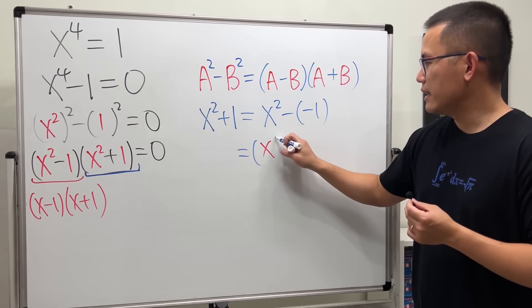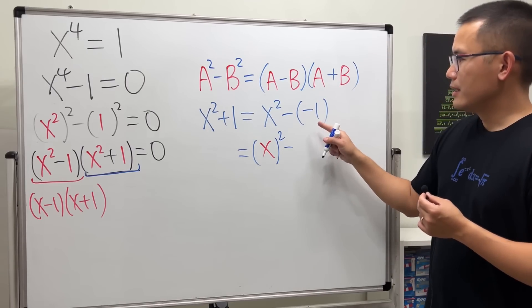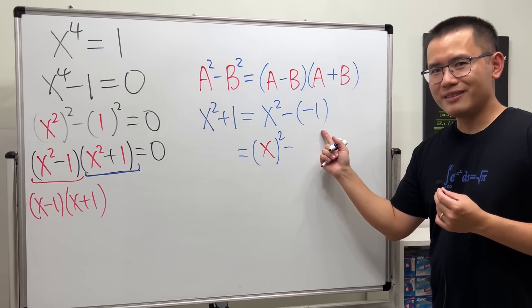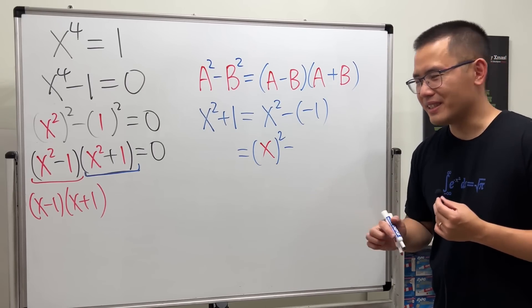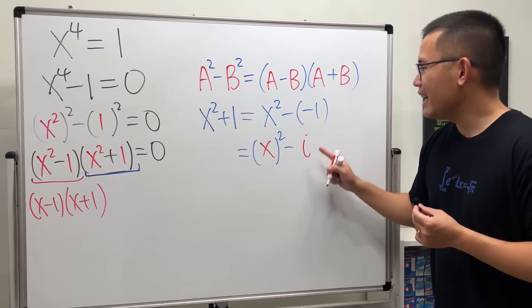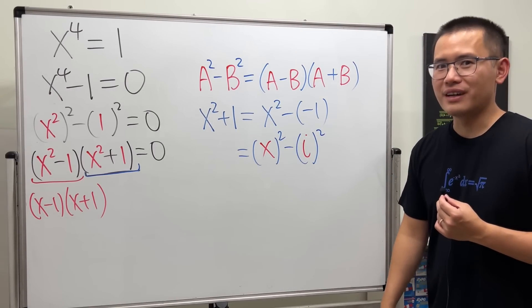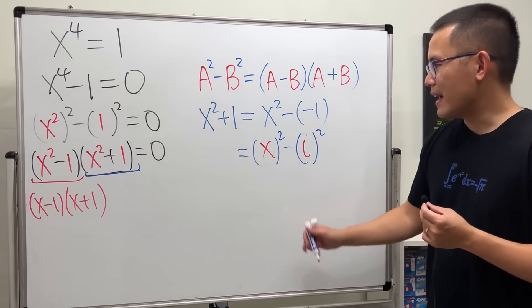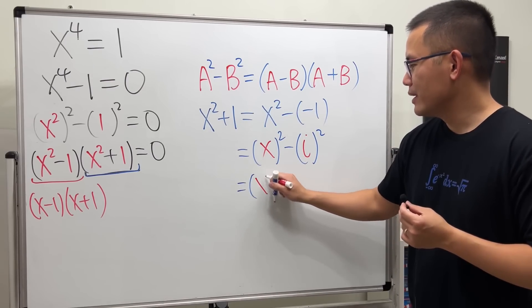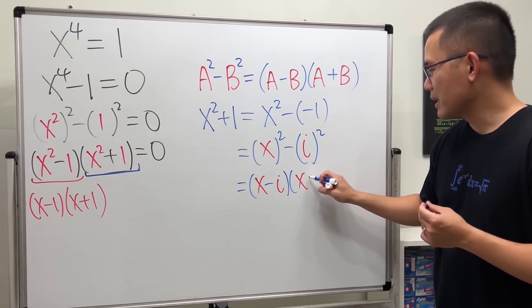This is just x and then square. Done. Now, minus, what square would give us negative 1? Well, the answer to that is our imaginary friend, i. i squared gives us negative 1 by definition of i. So we can factor it with the difference of two square formula. We get x minus i times x plus i.